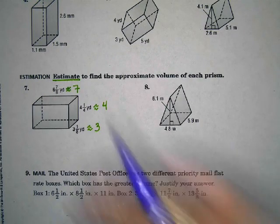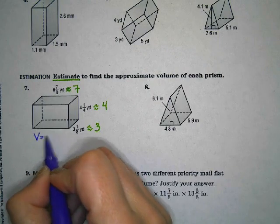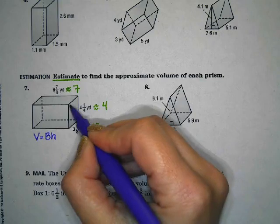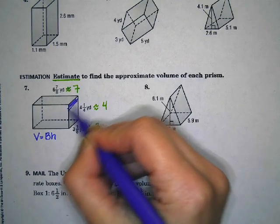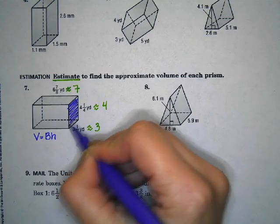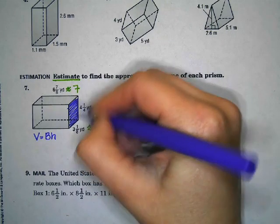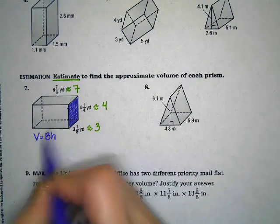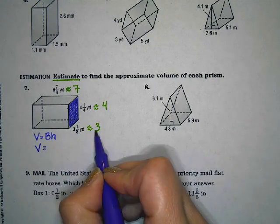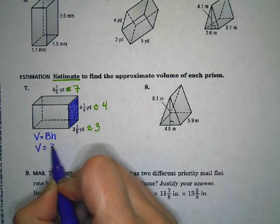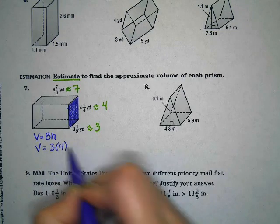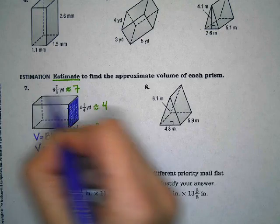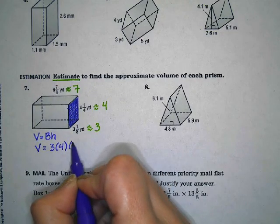Then we can go ahead and find our volume. So remember our volume again is the area of our base times our height. Our base in this one is going to be this side right here. We have a rectangle. Here's our base. So our base is going to be volume equals 3 times 4, because we're using our estimated values, times whatever it's being pushed over. So our height in this one is going to be 7.